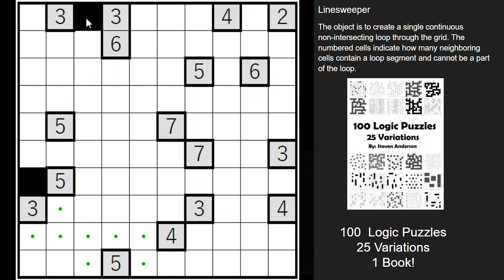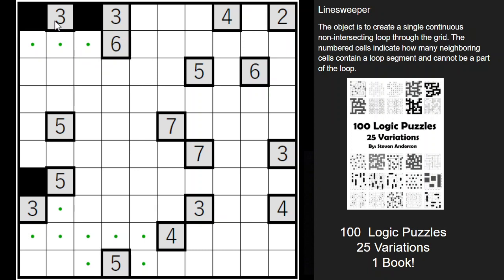We can do the same strategy here with this cell — again, a line cannot go into that dead end because it would have no way of escaping. So we know that cannot contain a line segment, and the same thing on the other end. We can't have the line going like that; there'd be no way for it to escape. There's only three cells left, so all of those must contain a line segment. Same thing with this three — only three cells available, so it must be all three. This six: there are only three left, we already have three segments indicated, so all six are going to be highlighted. This four has a dead end next to it, so I think you're catching on to the trend — lines cannot go into dead ends. There are only four spots available, so all four are going to contain a line segment.